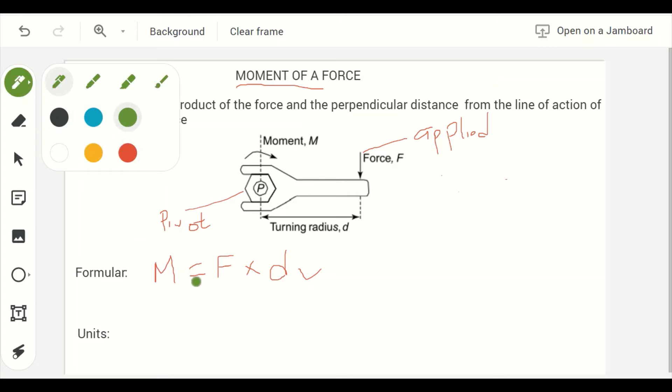From this formula, we can derive the unit for a moment. If you remember that force is measured in newtons and distance is in meters, then I can say that the unit for moment is newton meters.